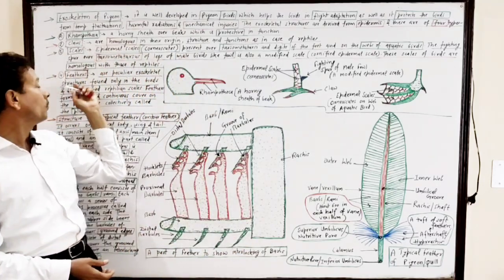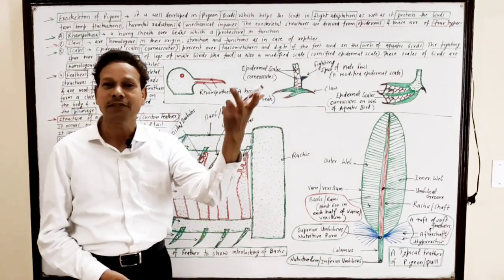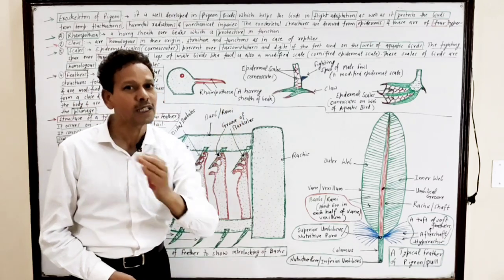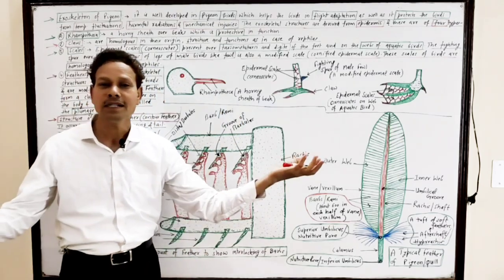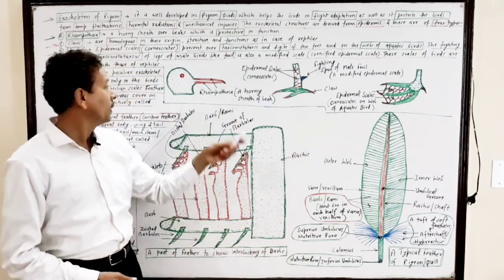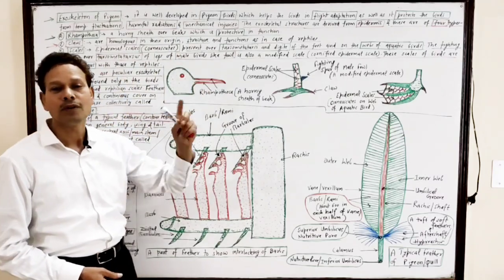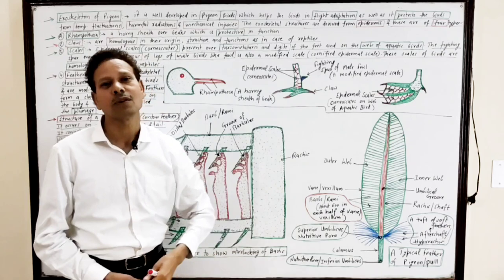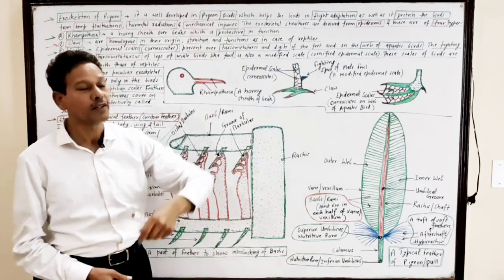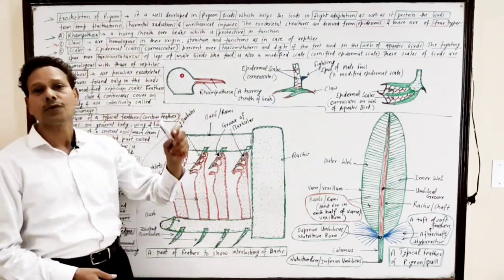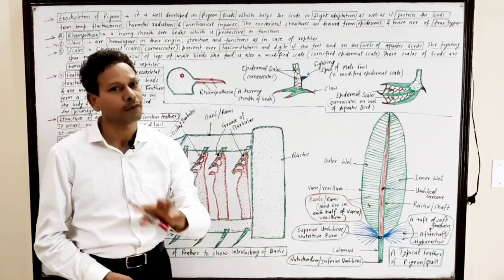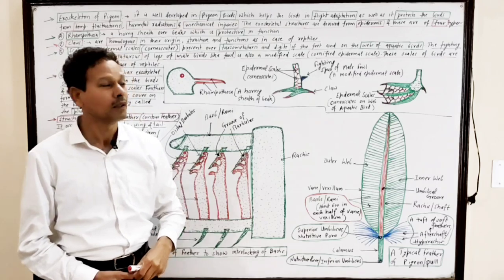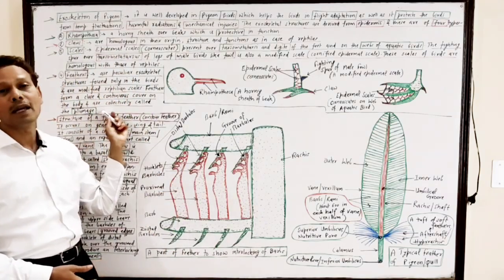The important topic of this lecture is feathers. Dear students, feathers are exoskeletal structures, and these are modifications of reptilian scales. Feathers are of different types, and the feathers present all over the body collectively constitute the plumage.